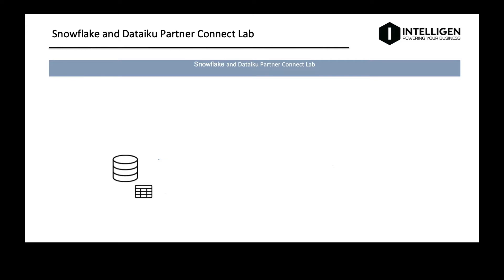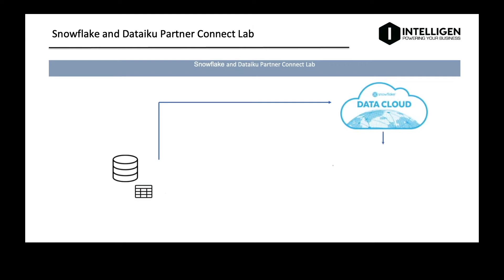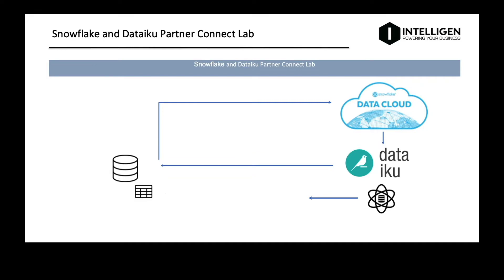We're going to create some databases, objects, and warehouses in Snowflake — though we don't need to do that manually because the PartnerConnect portal will automatically generate the resources we need. We're going to access COVID-19 data sets from Snowflake's Marketplace and use Snowflake's PartnerConnect to seamlessly create a DataIQ cloud trial. Next, we'll create a data science project in DataIQ, perform analysis on data queried from Snowflake, create and evaluate a simple ML model, write results back to Snowflake, and use cloning and time travel to create a test environment.